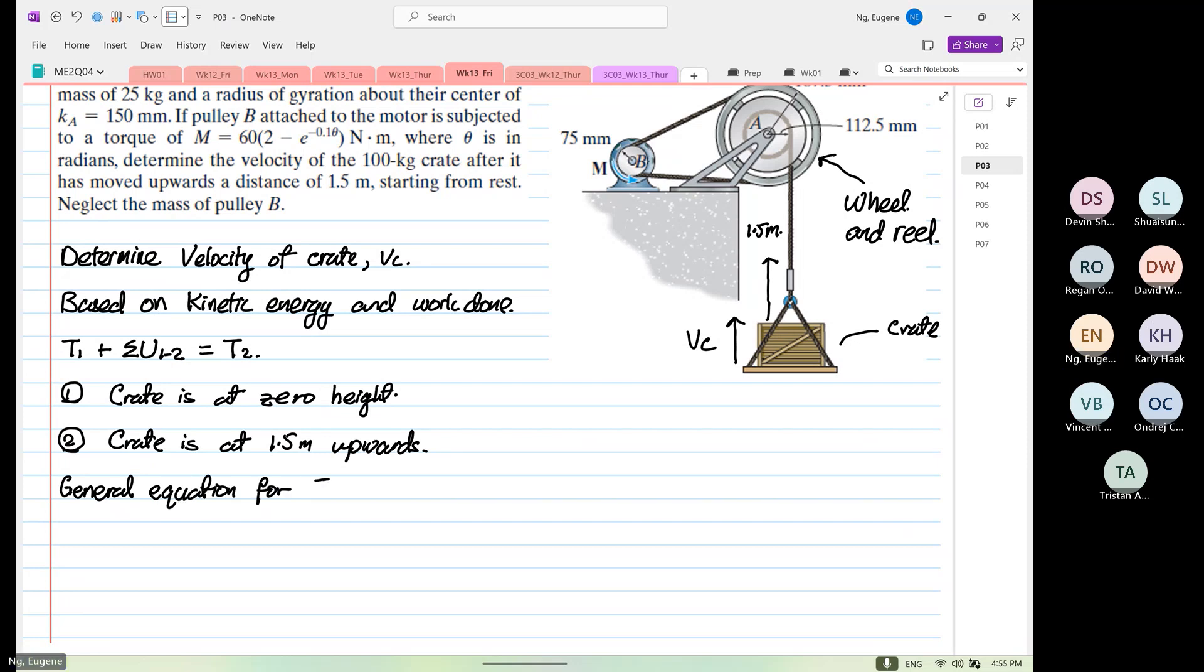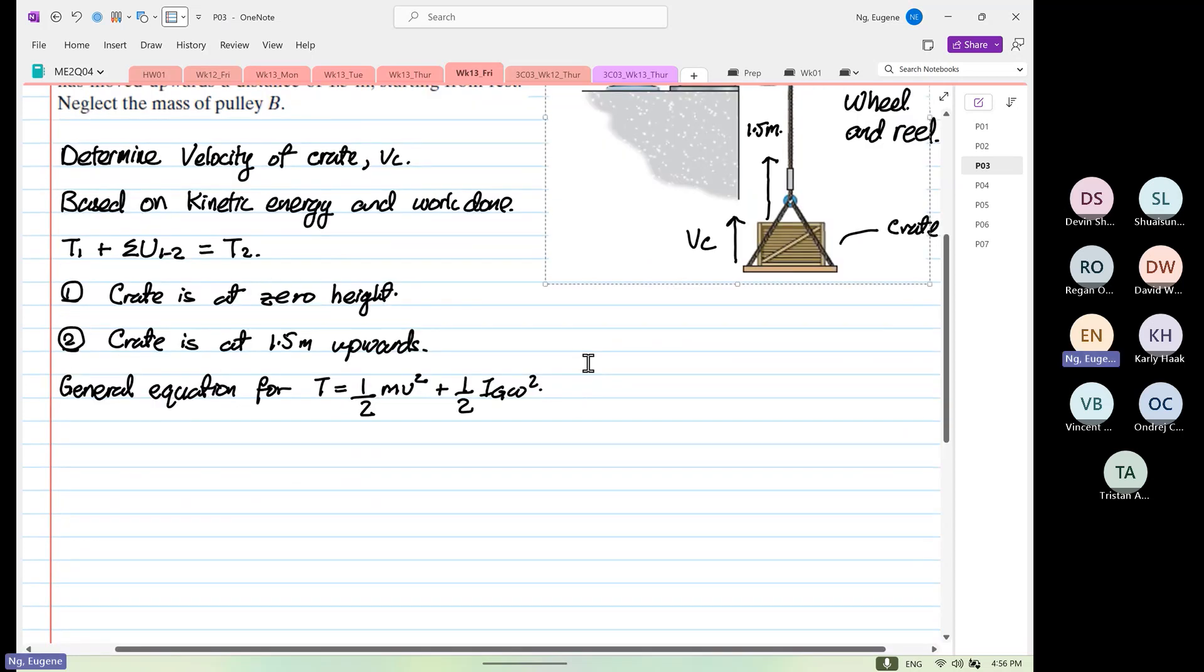The general equation for T. T is equal to half MV squared plus by half IG omega squared. Now this formula will be provided. Repeat again, this formula will be provided. So what we're going to do now, we have to analyze the system individually. Then finally we have to assemble them together. Formula is really straightforward. Not difficult at all.